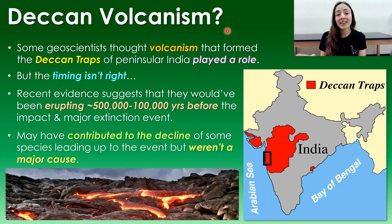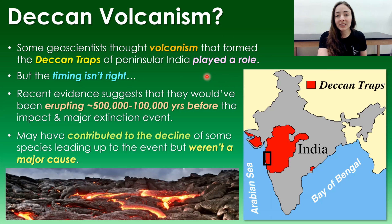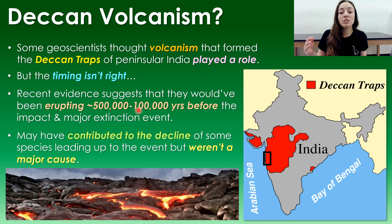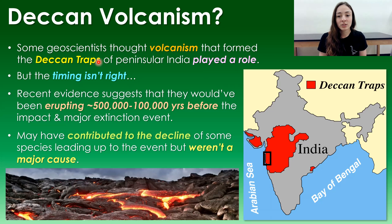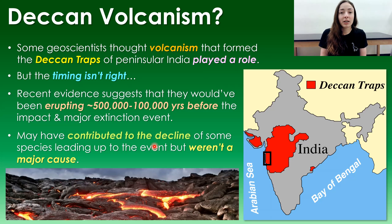Some scientists have also hypothesized that the volcanism associated with the Deccan Traps in peninsular India played a role in this major mass extinction event. But more recent evidence suggests the timing just isn't right — these volcanoes would have been erupting during a period of around 500,000 to 100,000 years before the major impact and extinction event. So Deccan volcanism likely didn't cause the mass extinction, but it may have contributed to the decline of some species leading up to the event, making them less likely to survive the impact and its aftermath.